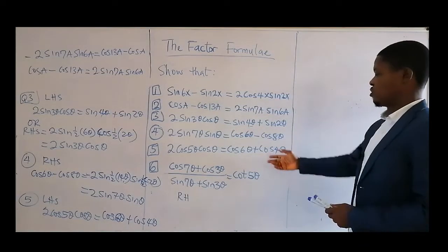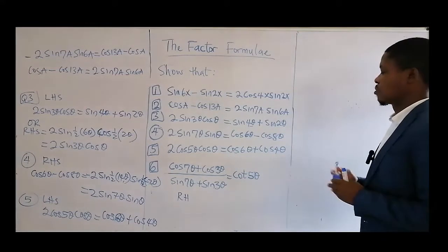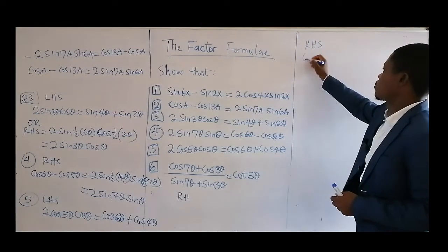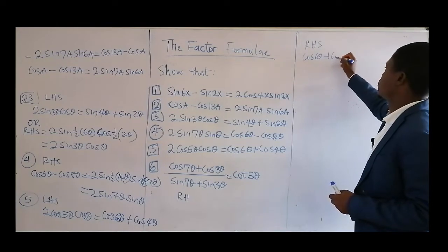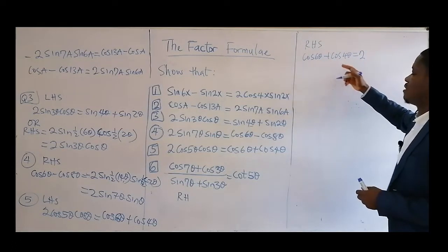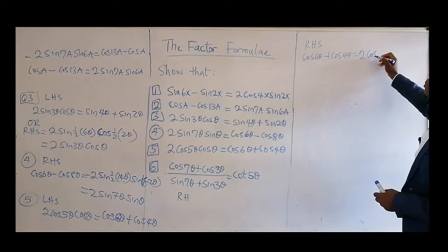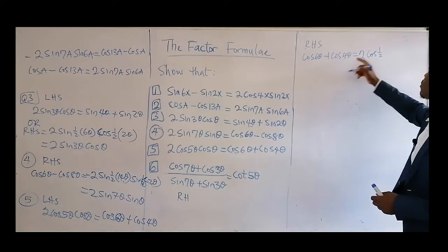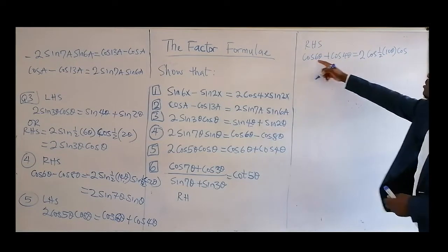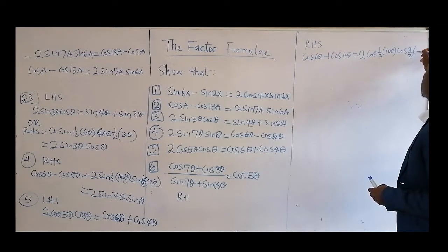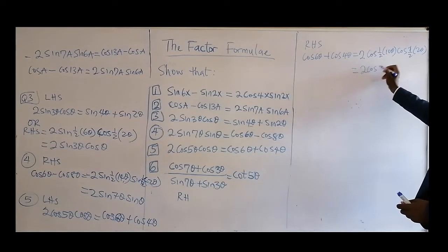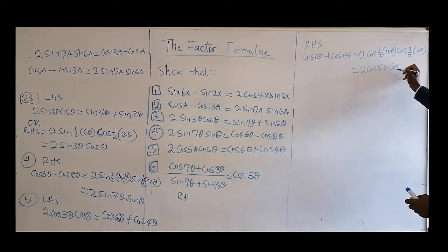If you want to work on the right-hand side: when you have additions of cosines, that is equal to 2cosine of half of (6θ + 4θ) = 10θ, times cosine of half of (6θ minus 4θ) = 2θ. That gives 2cos(5θ)cos(θ) — half of 10 is 5, half of 2 is 1 — so both sides match.